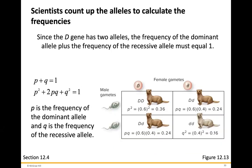Scientists count up the alleles to calculate the frequencies. Since the dark fur gene has two alleles, the frequency of the dominant allele plus the frequency of the recessive allele must equal 1. You can have different combinations — capital D/capital D, capital D/lowercase d, or lowercase d/lowercase d — getting one allele from mom and one from dad. Once you determine the allele frequencies by counting up the different variations, you add these up and they need to equal 1.